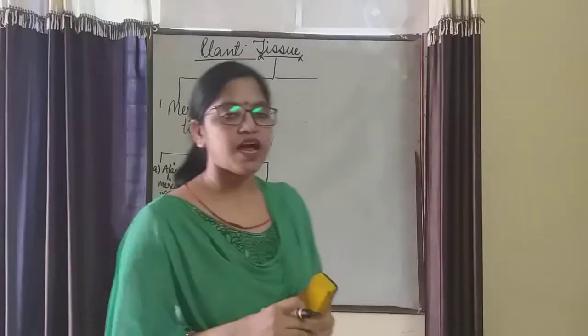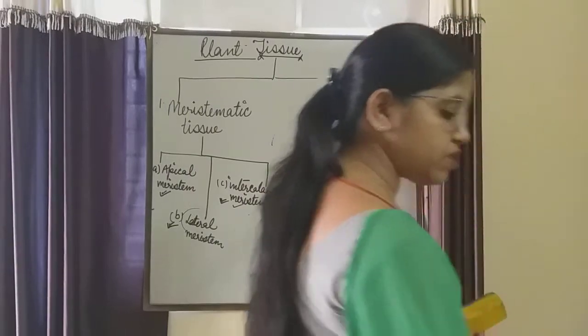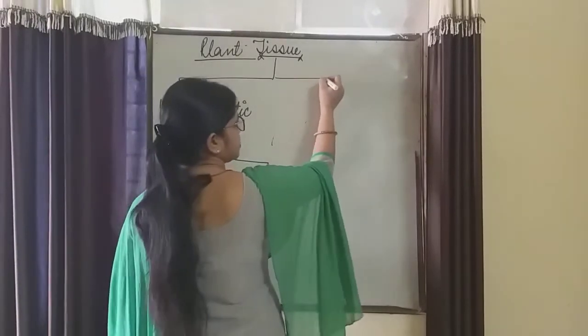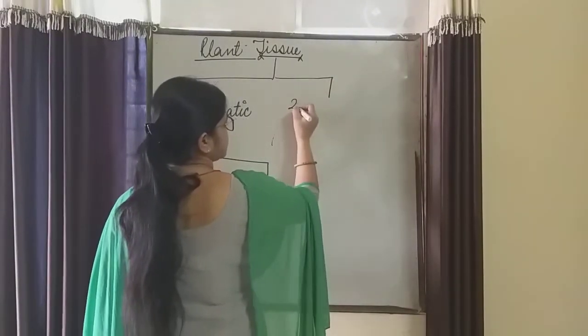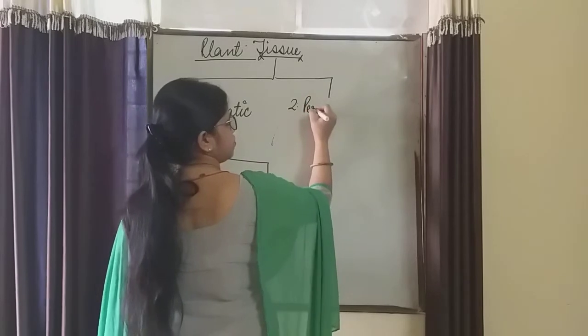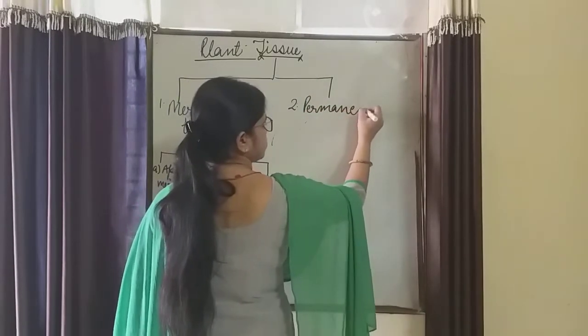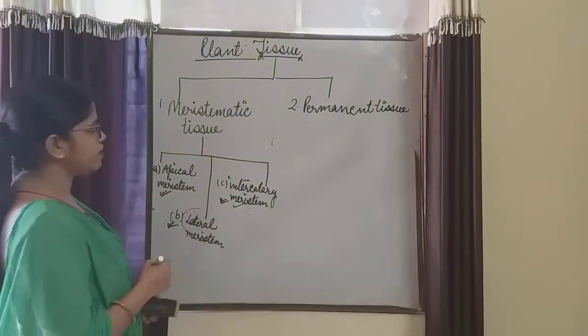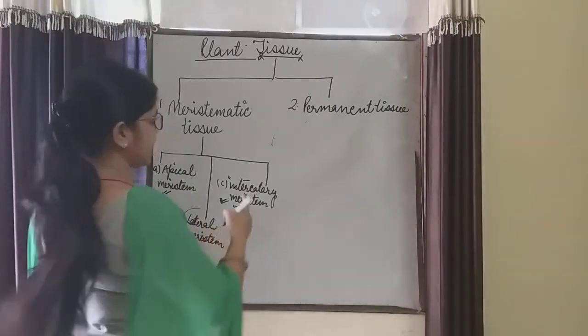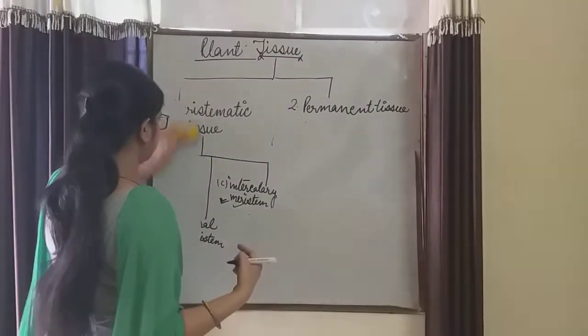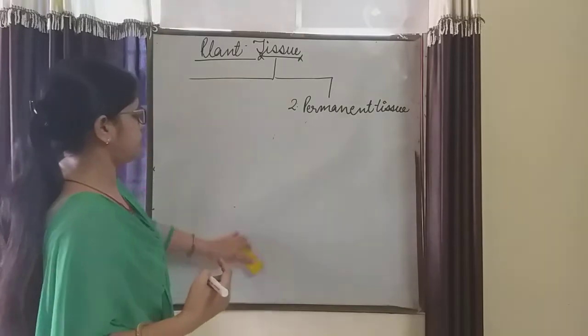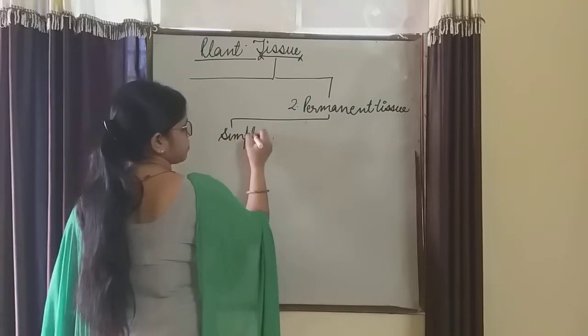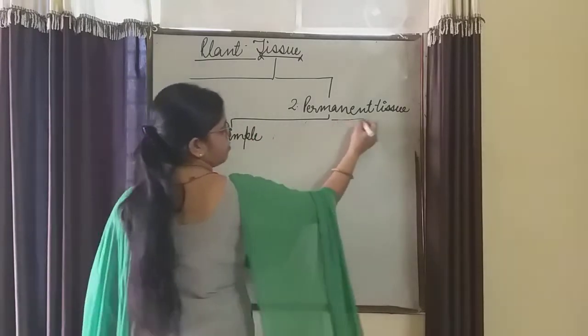Hello everyone, in the last video we studied about meristematic tissue. Today we are taking the permanent tissue. As I told you in the last video, the second type of plant tissue is permanent tissue. Permanent tissue is divided into simple permanent tissue and complex permanent tissue.